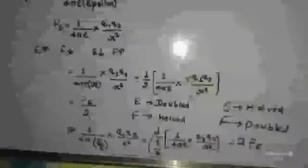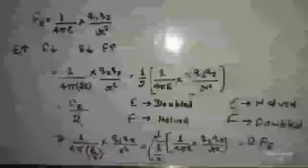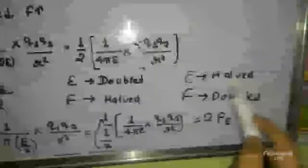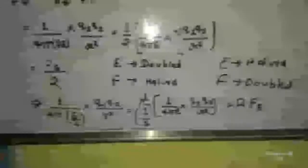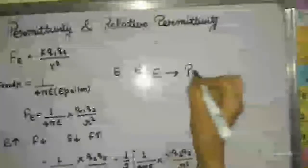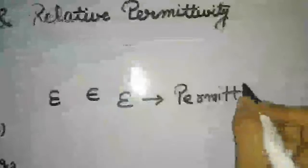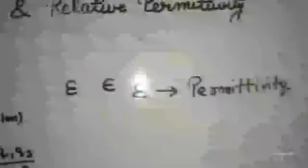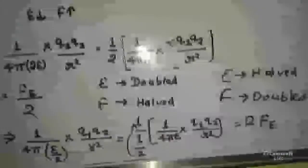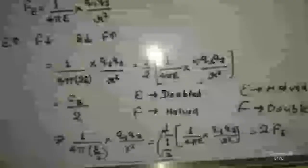If we double the value of epsilon, the value of F will be halved. We just put 2 epsilon in place of epsilon, so it becomes 1 upon 4 pi into 2 epsilon into Q1 Q2 upon R squared. Then the half outside becomes Fe by 2. So when epsilon's value is doubled, F becomes Fe by 2. Now, when we halve the permittivity, the force is doubled. What is epsilon? Epsilon is permittivity — remember that epsilon is permittivity.